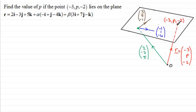We've got the point then with coordinates (-3, p, -2) on the plane. And remember this first part of the equation of the plane, this vector 2i - 3j + 5k represents a fixed point on the plane. And then these two vectors are vectors which are parallel to the plane that are going in different directions.